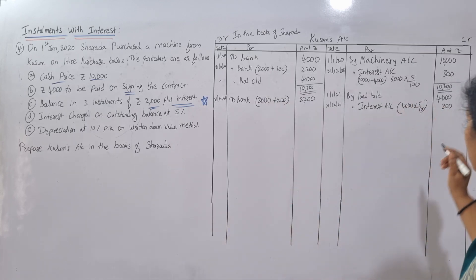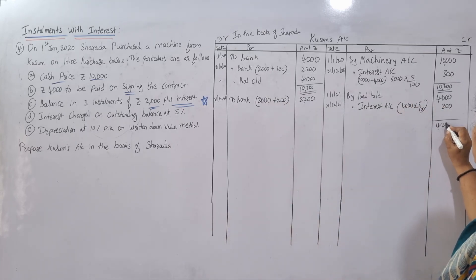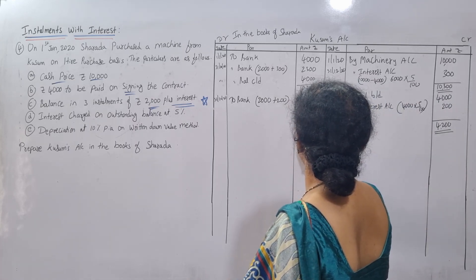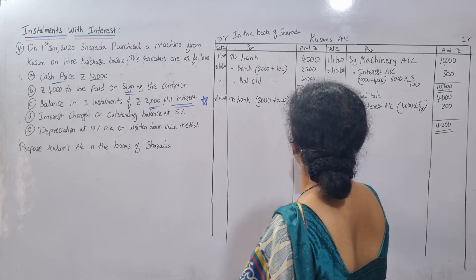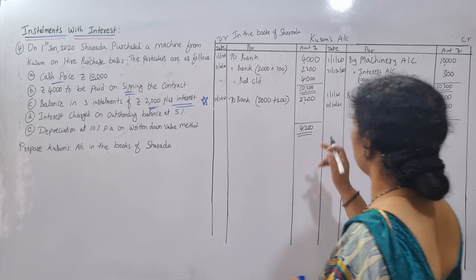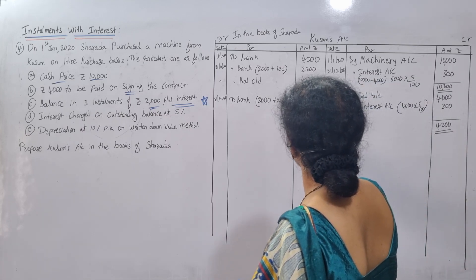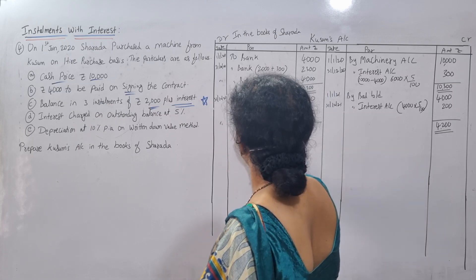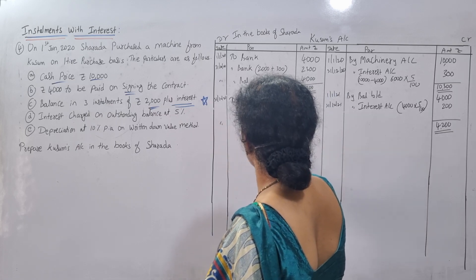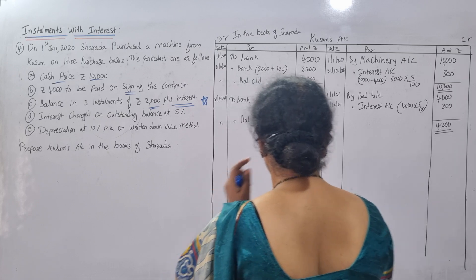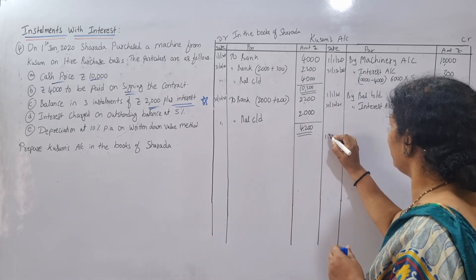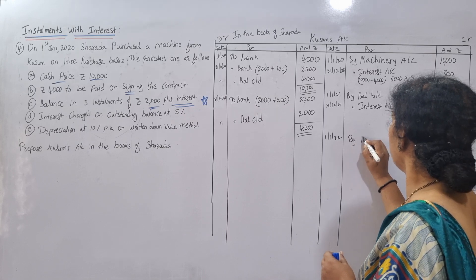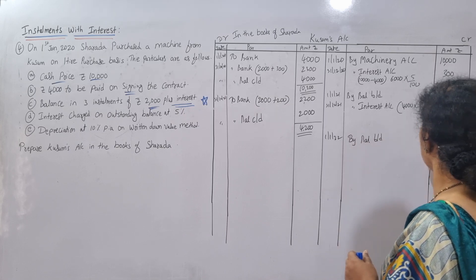Account total is 4,200. Debit side is 2,200, leaving a balance carried down of 2,000 at the end of year two. Balance brought down on 1st January 2022 is 2,000.